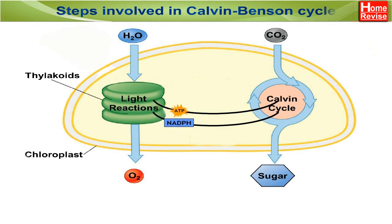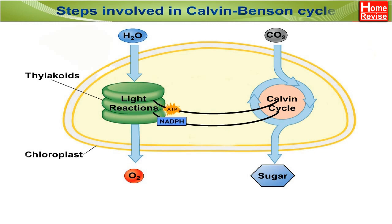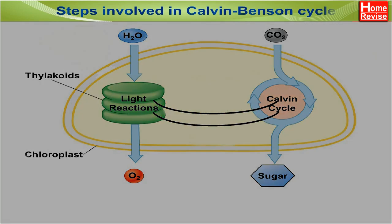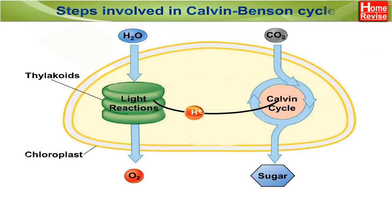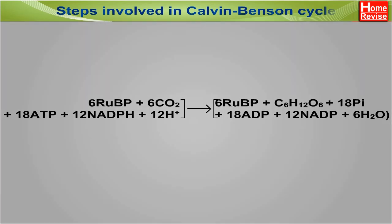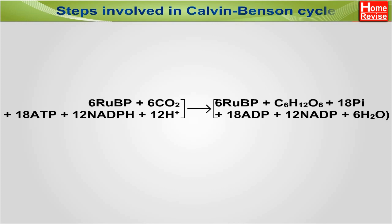Molecules of ATP and NADPH produced during the light reaction provide the energy needed to fix carbon dioxide. Hydrogen from NADPH combines with carbon dioxide, producing glucose. The overall summary of chemical reactions can be represented as follows.